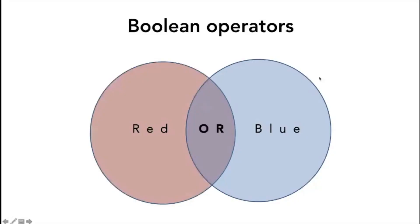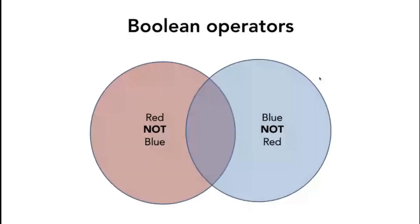The next Boolean operator is NOT. This operator is used to exclude a topic. When searching for 'red NOT blue,' we get only the red circle and exclude the overlapping area, so only the red crescent is the output. When searching for 'blue NOT red,' we get the opposite blue crescent.